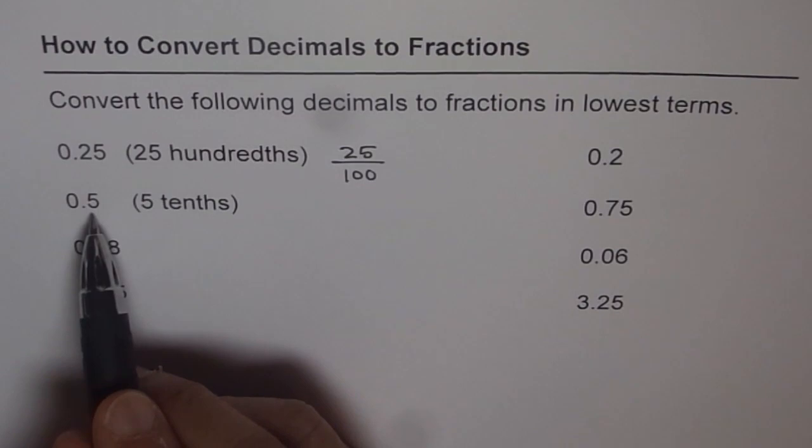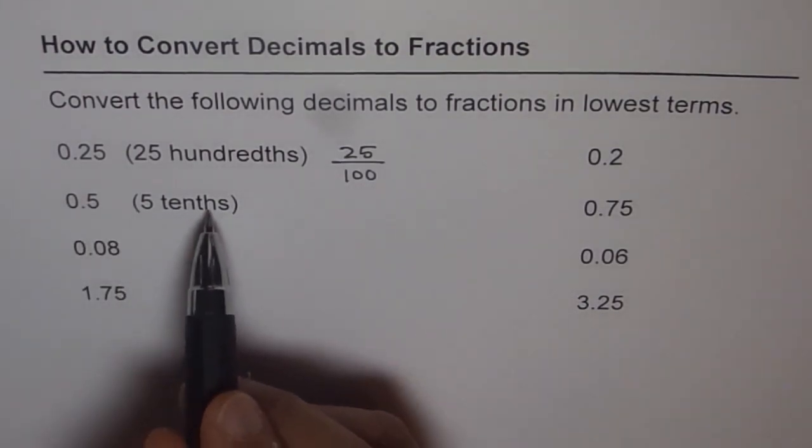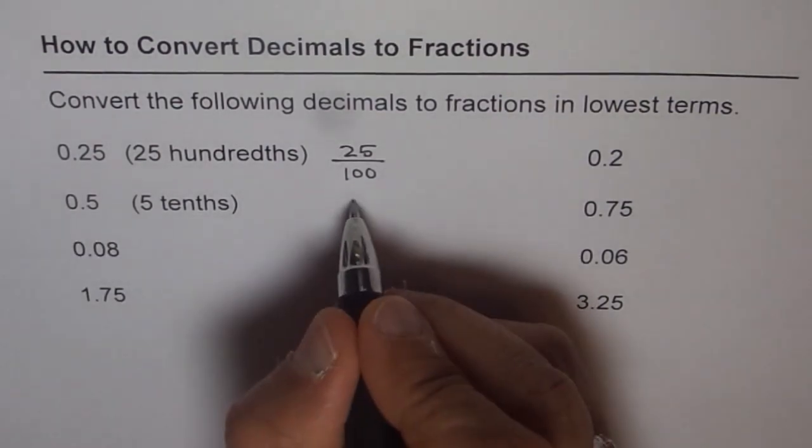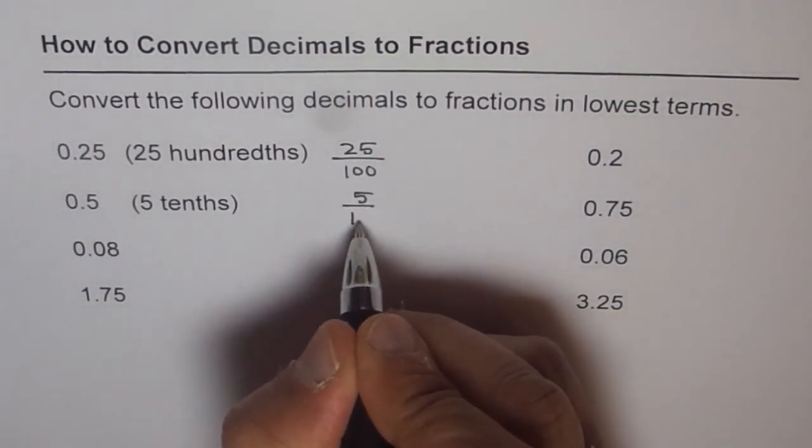What is 0.5? It is 5 tenths. That means it is 5 over 10.